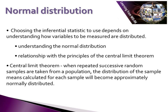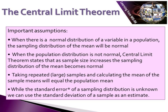In mathematical probability theory, the central limit theorem states that when repeated successive random samples are taken from a population, the distribution of the sample means calculated for each sample will be approximately normally distributed. The central limit theorem has a number of important assumptions. First, when there is a normal distribution of a variable in a population, the sampling distribution of the mean ends up being normal. When the population distribution is not normal, the central limit theorem states that as the sample size increases, the sampling distribution of the mean becomes normal. It also assumes that taking repeated or large samples and calculating the mean of the sample means will equal the population mean.